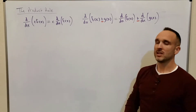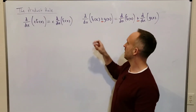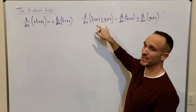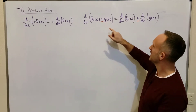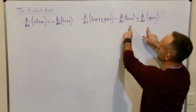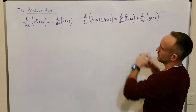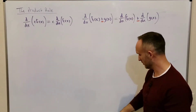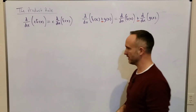However, if you have the derivative of f(x) times g(x), unfortunately you can't just take the derivative of f times the derivative of g. And that's what this video is all about — how do you do that derivative?